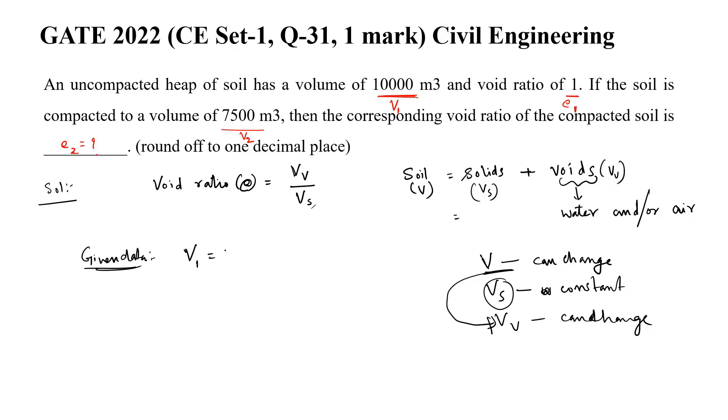V1 equal to 10,000 meter cube. V2 is given by 7,500 meter cube. Whereas E1 is given by 1, E2 should be found out.